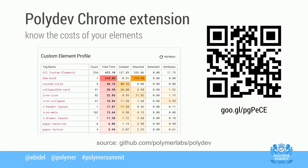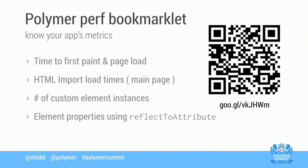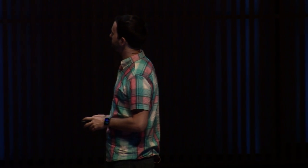If you can't measure it, you can't improve it. Paul Irish talked about the Polydev Chrome extension, which shows the atomic weight of all custom elements on your page to identify what's at fault. There's also a performance bookmarklet that gives you first paint time, how long HTML imports take to load, number of elements created, and which custom element properties are using reflectToAttribute.